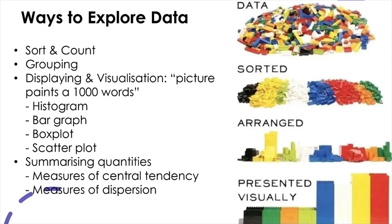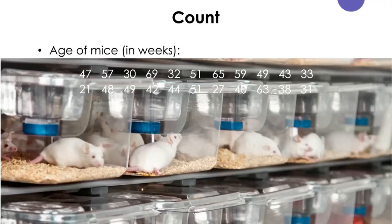Finally, we can summarize data with a couple of numbers that represent the center of a data set and how much overall spread there is from the center, which are called measures of central tendency and of dispersion. Now let's take a look at each step of EDA, starting from sorting and counting with some data.